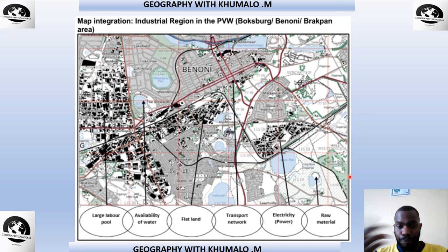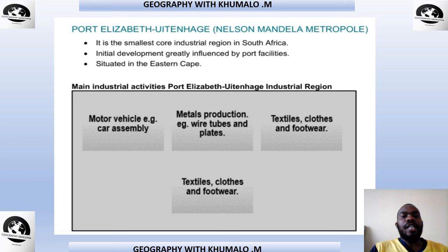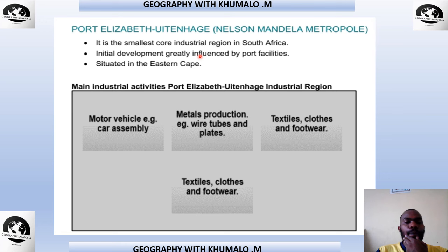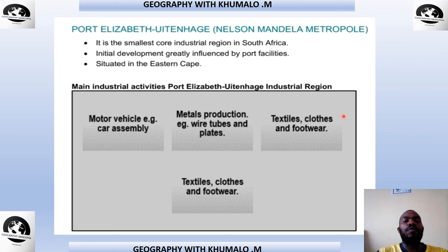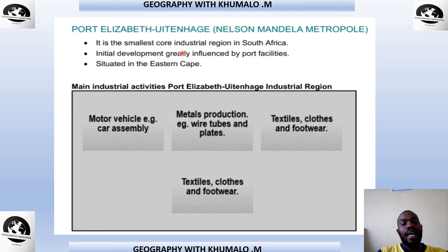Now let's look at the Port Elizabeth/Uitenhage — also called the Nelson Mandela Metropole. It is the smallest core industrial region in South Africa. Its development was greatly influenced by the port — unlike the PWV which was influenced by the discovery of gold, this one was influenced by the development of port facilities, which are the harbors. It is located in the Eastern Cape province.